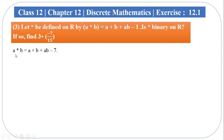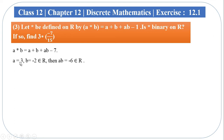So let a star b equal to a plus b plus a b minus 7. Let's prove a star b equal to a plus b plus a b minus 7. Therefore a into b is the answer. So the answer is minus 6. So if minus 6 belongs to real number, a is real number, b is real number, so a star b is real number — proof.